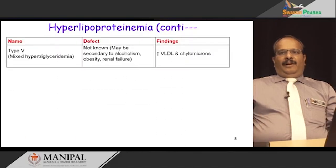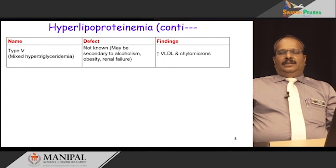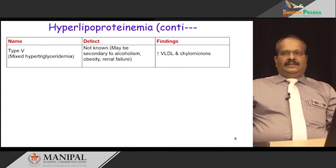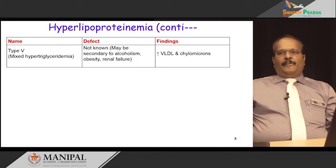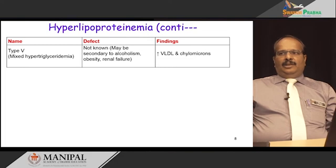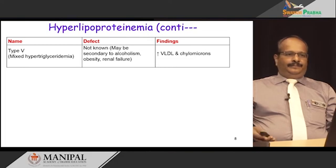Type 5, mixed hypertriglyceridemia. The exact cause is not clear or unknown, but may be secondary to alcoholism, obesity, or renal failure. The clinical findings include increased VLDL and chylomicrons in the circulation.